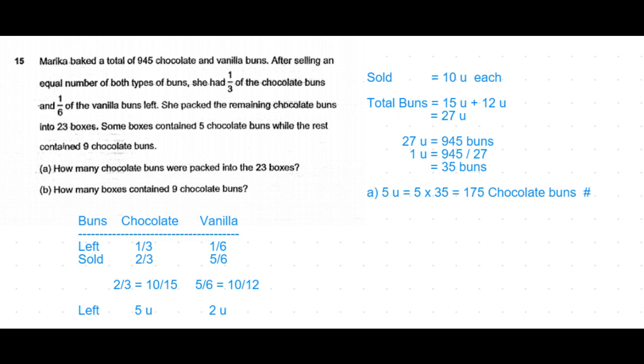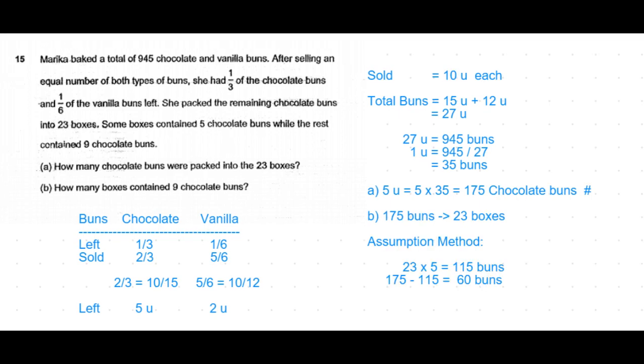Coming to part (b): How many boxes contain nine chocolate buns? For this we are going to use the assumption method. 175 buns were packed into 23 boxes. Assume all the 23 boxes had five chocolate buns.